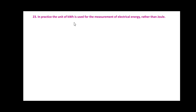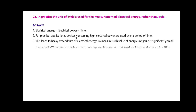In practice, the unit of kWh is used for measurement of electrical energy rather than Joule. Electrical energy is electrical power multiplied by time. For practical applications, devices consuming high electrical power are used over a period of time, leading to heavy expenditure of electrical energy. To measure such values of energy, the unit Joule is significantly small. Hence, the unit kWh is used in practice. One kWh represents power of 1 kW used for 1 hour and equals 3.6 × 10⁶ Joules.